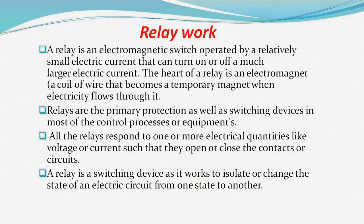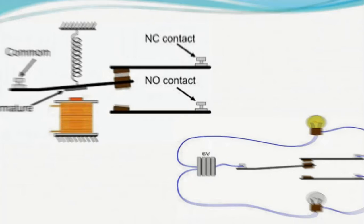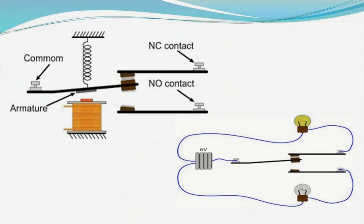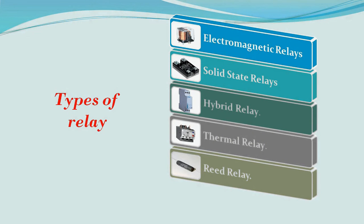A relay is a switching device that works to isolate or change the state of an electric circuit from one state to another. Types of relays include: electromagnetic relay, solid state relay, hybrid relay, thermal relay, and reed relay.